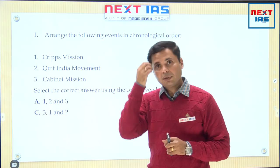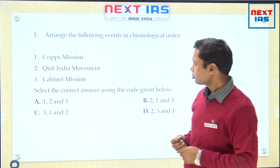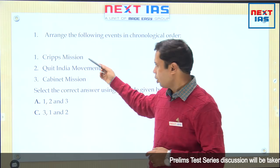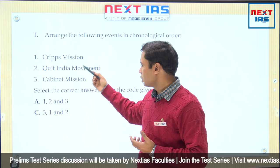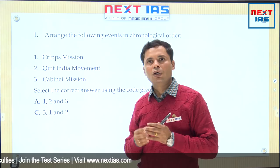Starting with the first question, which will be displayed on the board: arrange the following events in chronological order. We are given three events — Cripps Mission, Quit India Movement, and Cabinet Mission — and we have to put them into chronological order.